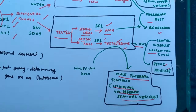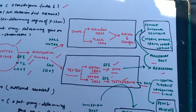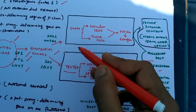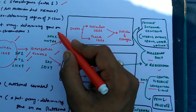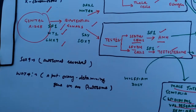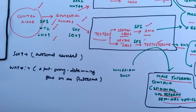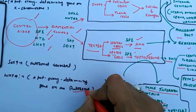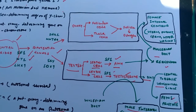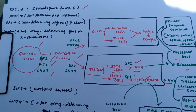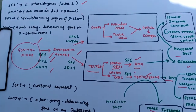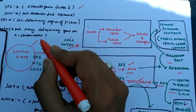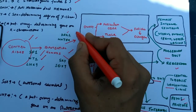The Wolffian duct differentiates under the effect of testosterone into the male internal genitalia — the epididymis, vas deferens, and seminal vesicle. In the case of the female, the ovaries are differentiated and formed by DAX1 and WNT4A. WNT4A means a potential ovary-determining gene located on the autosome, not on the sex chromosome.